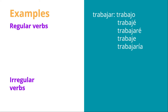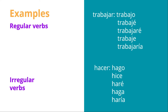Then you have another type, which is irregular verbs. Here is an example: hacer. Hago, hice, haré, haga, haría. As you can see, the word changes: hago, hice, haré, haga, haría. This verb is conjugated in different tenses and different modes.